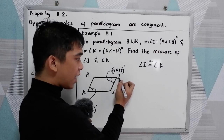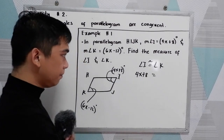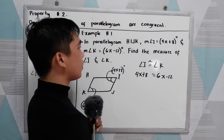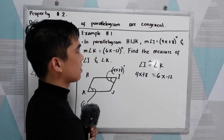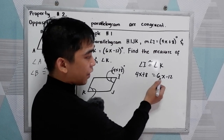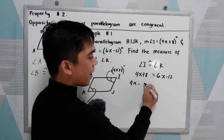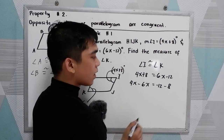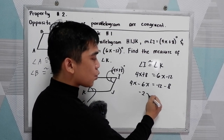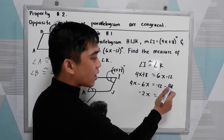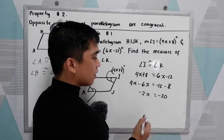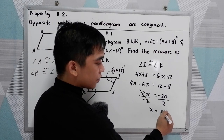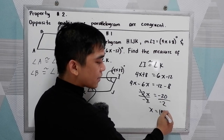Given that angle I is 4x plus 8, set equal to angle K which is 6x minus 12, we need to find x. So, 4x minus 6x equals negative 12 minus 8. That gives negative 2x equals negative 20. Dividing by negative 2, x is equal to negative 20 divided by negative 2, which is positive 10.